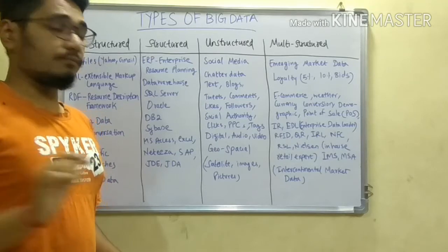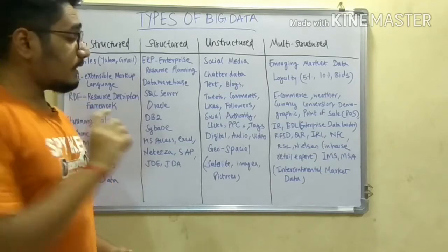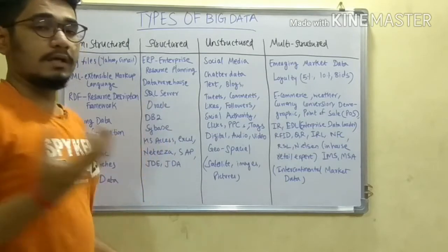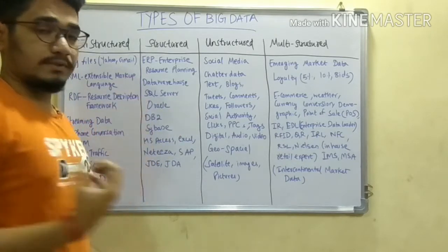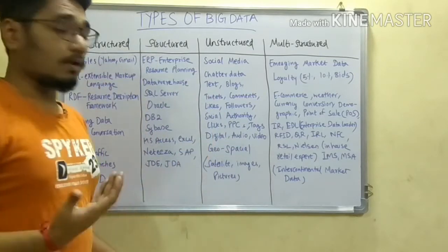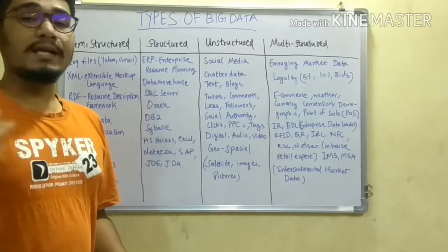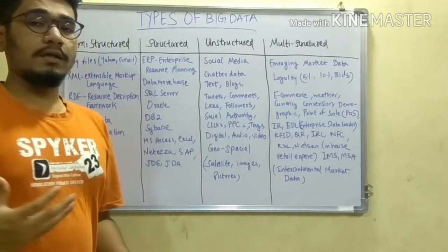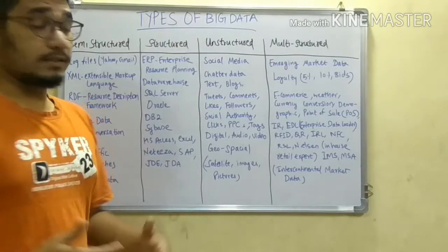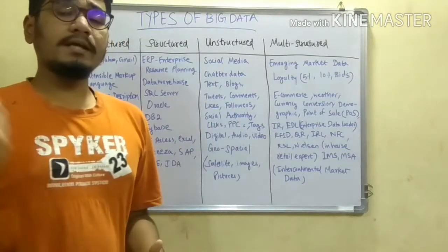PPCs — pay-per-clicks — are generated when you click on a YouTube video or a particular site link. That request is sent to the server, gets logged, and collects all traffic from those sources. Next are tags, digital audio, video, and geospatial data, which includes satellite images taken every 24 hours for monitoring purposes. All these are categorized under unstructured data.